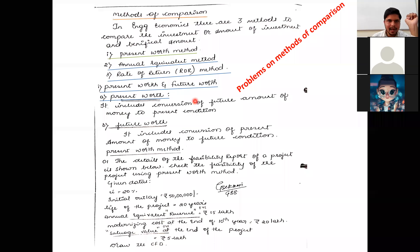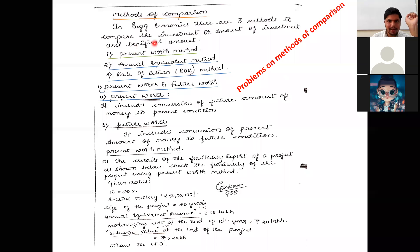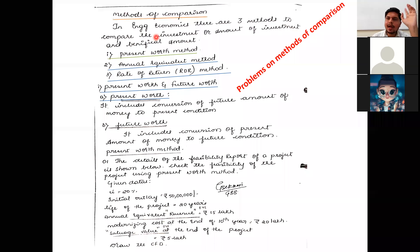In today's class we are discussing Type 5 problems — problems on the method of comparison. This is the last type of problem under Module 4. In engineering economics and finance, there are totally three methods to compare the amount of investment and amount of benefit.